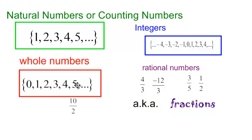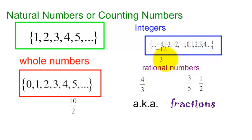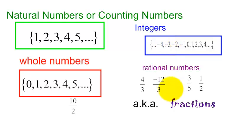If you're a whole number, most of them are natural numbers except for zero. But if you're a whole number, then you're also an integer and also a rational number. If you are an integer, look at negative twelve over three — negative twelve divided by three is just negative four. So some integers like negative one, negative two, negative three are in the integer group, but they're also in the rational group.